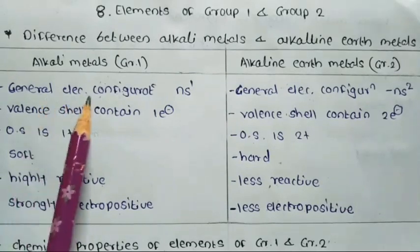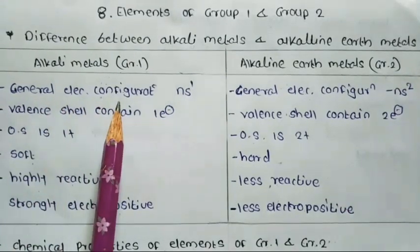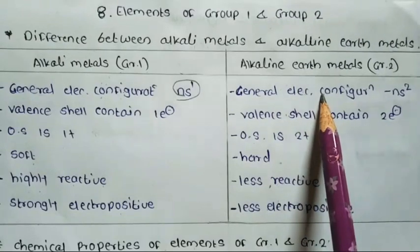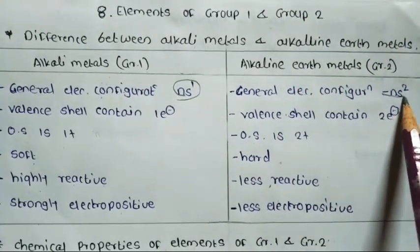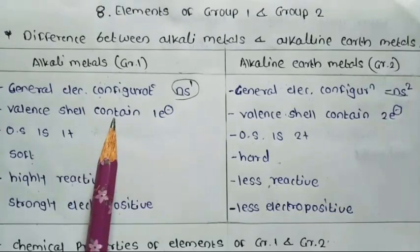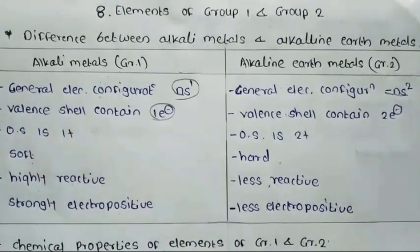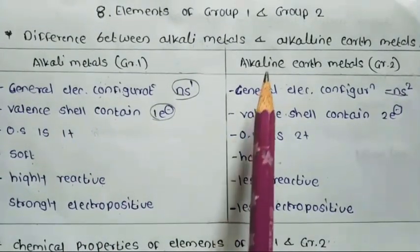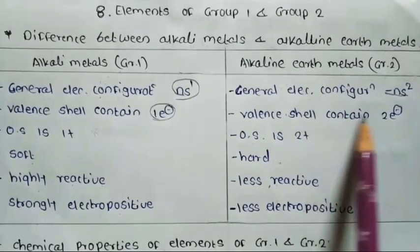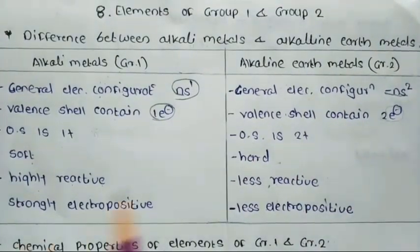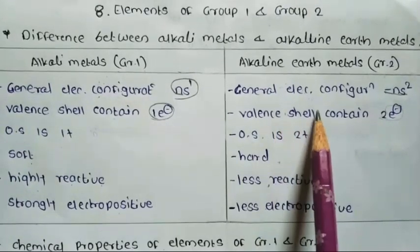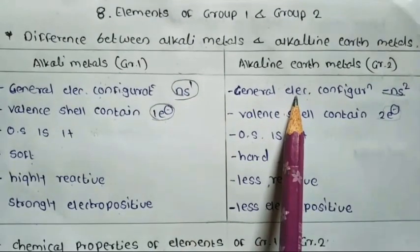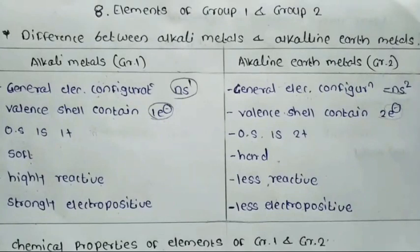First point: general electronic configuration. The general electronic configuration of alkali metals is NS¹, and the general electronic configuration of alkaline earth metals is NS². In alkali metals, there is one electron present in the valence shell. In alkaline earth metals, there are two electrons present in the valence shell.